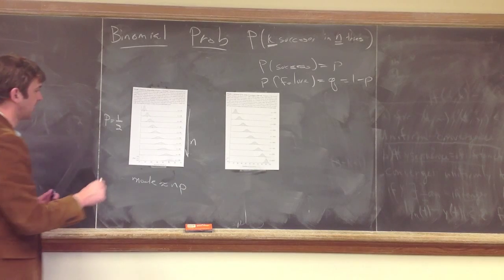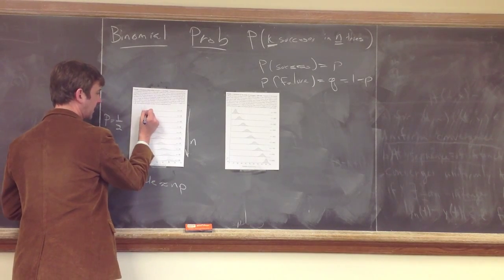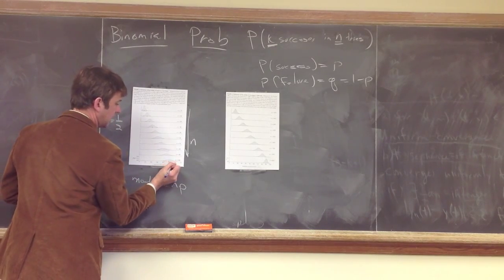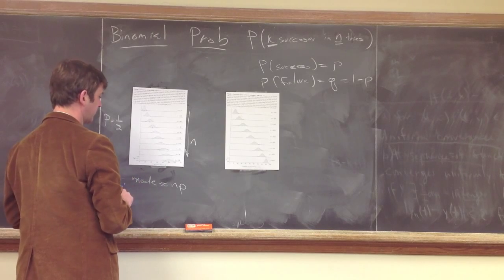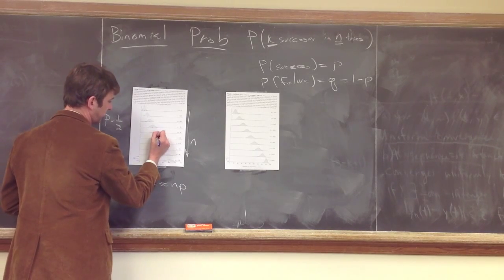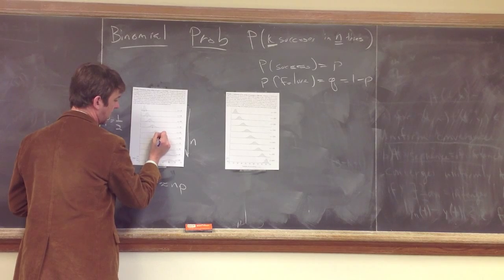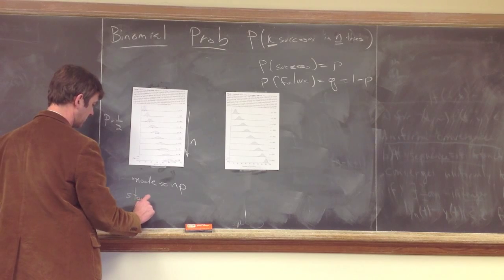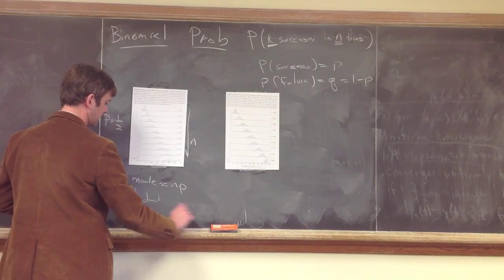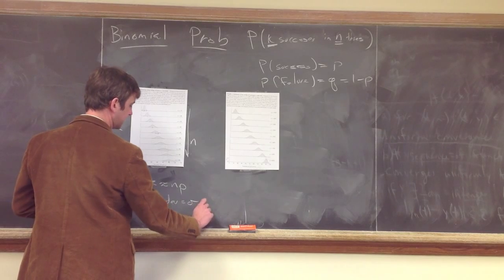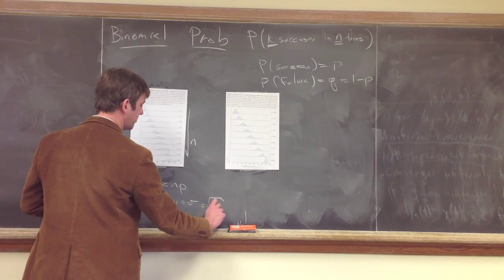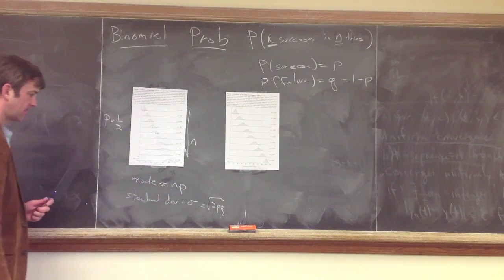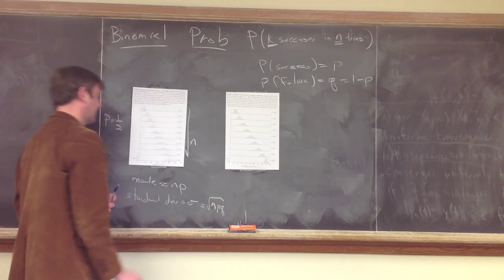You also notice something else is happening: the width of the distribution, this scale here, is getting markedly wider. A signature of that width is what's called the standard deviation, which is approximately proportional to half from the center out, usually denoted sigma. In this case, it's the square root of npq.